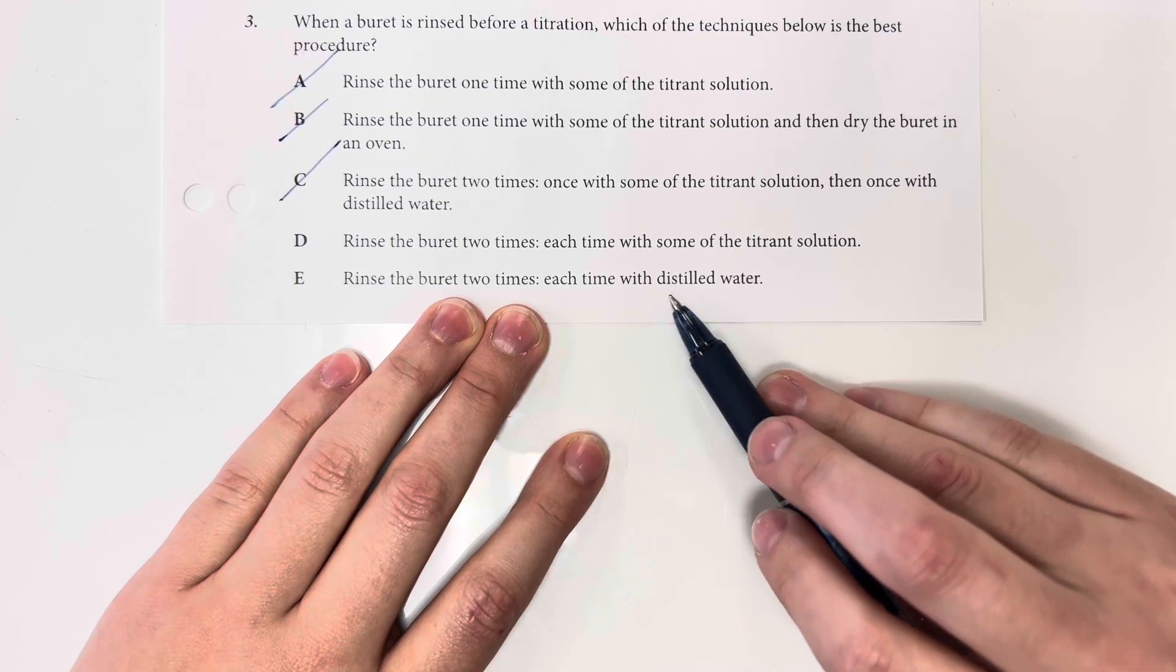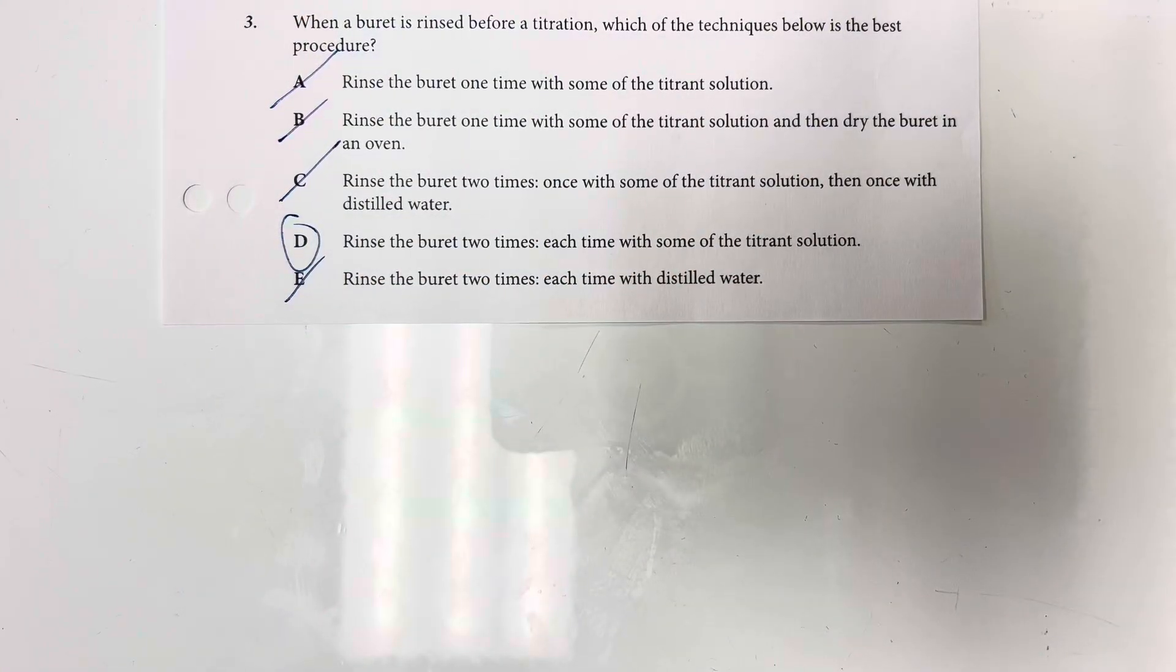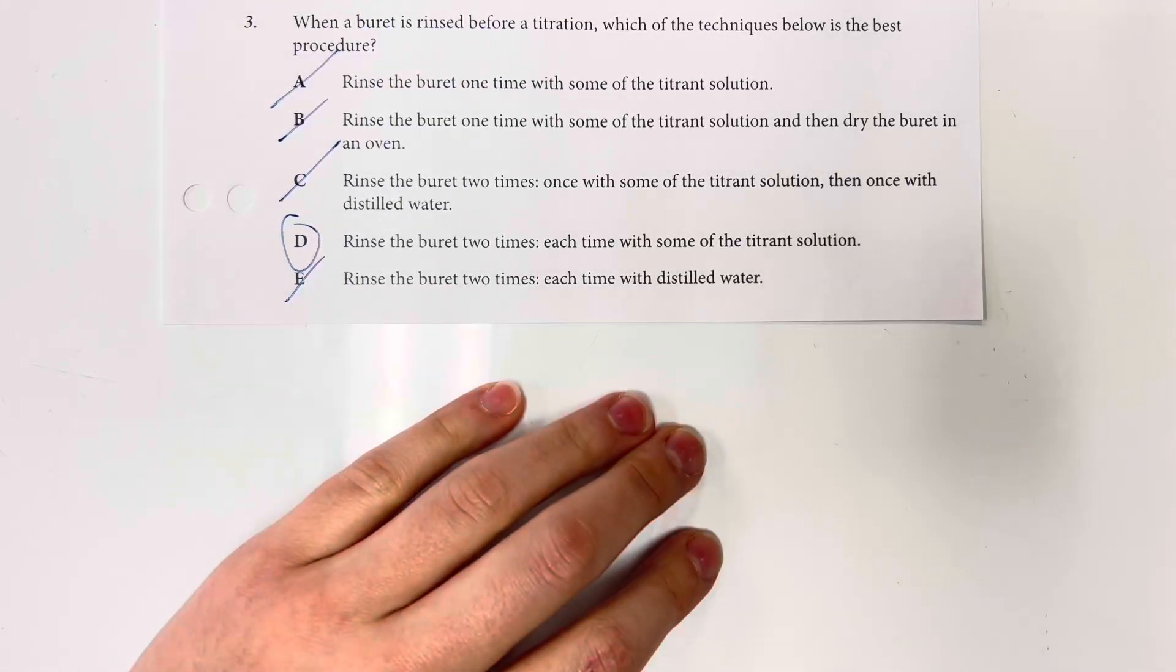And then rinse a burette two times, each with distilled water, that could mess with my molarity. So option choice D is going to be my best choice for making sure that my burette is clean and does not mess with the molarity of my concentration.